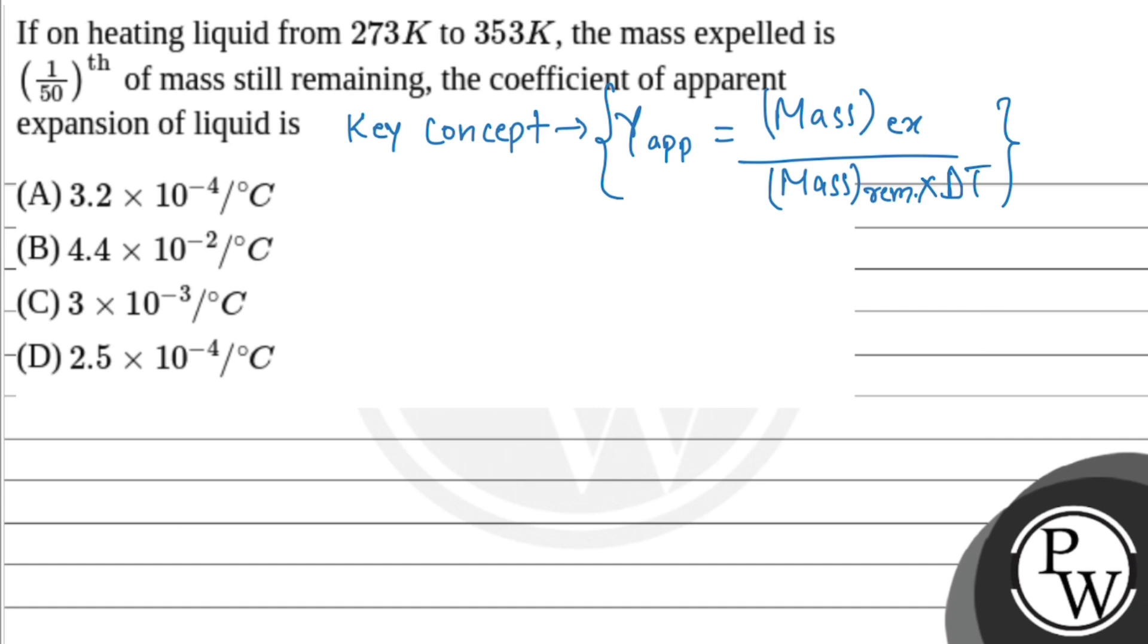Mass expelled is 1/50th of mass remaining. Here we can find mass expelled upon mass remaining which will be equal to 1 by 50. So gamma apparent equals mass expelled upon mass remaining which equals 1 by 50.